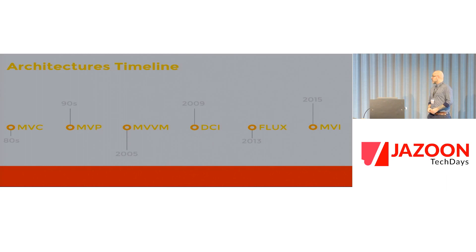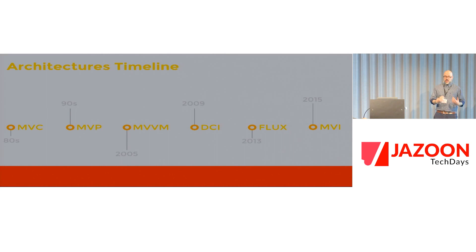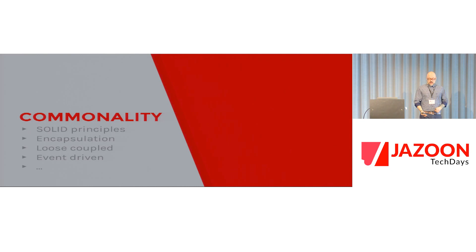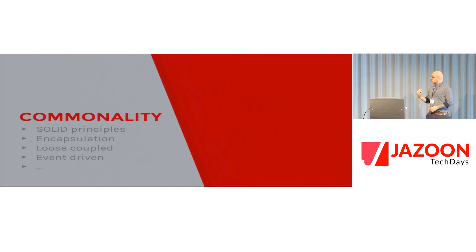MVI is basically the first architecture that tries to solve the problem: now that we know reactive programming, let's figure out if there's an architecture that fits reactive programming concepts nicely — one that lets us use the power of observables to structure the entire application. The commonality of all these architectures is they try to stick with SOLID principles, encapsulate data, be loosely coupled, but still communicate — mainly through events.